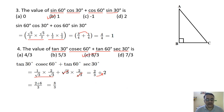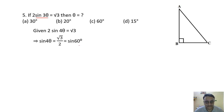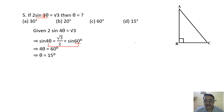Question 5: 2sin 3θ = √3, find θ. So sin 3θ = √3/2 = sin 60°. Therefore 3θ = 60°, giving θ = 20 degrees. The correct option is option D.